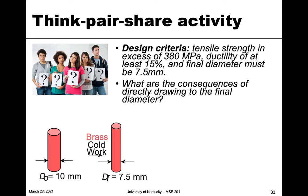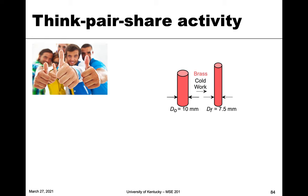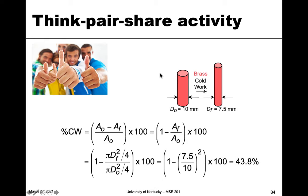Let's look at the consequences of drawing to the final diameter. We calculate the percent cold work using: percent CW = 1 minus (d_final / d_original) squared, since the pi and fours cancel for circular cross sections. Plugging in 7.5 over 10 squared and subtracting from one, we get a cold work of 43.8 percent.